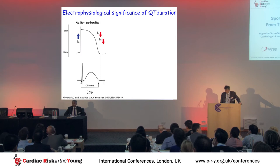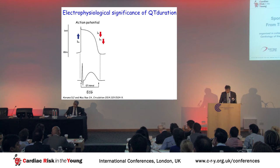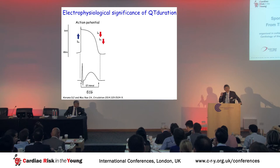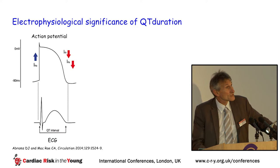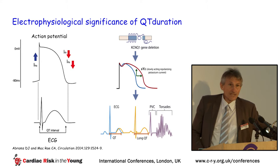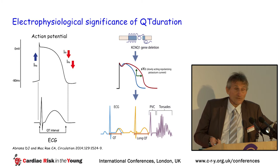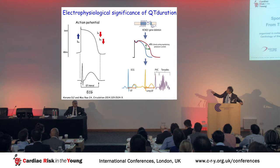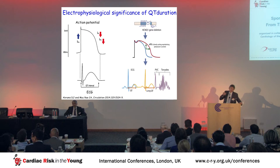What is the electrophysiological significance of QT duration? The normal action potential with ion movements is represented on the ECG. The QT duration represents the beginning of depolarization of the first ventricular cell until the end of repolarization of the last ventricular cell. A mutation on a potassium ionic channel can cause an increase in action potential duration, increasing QT duration and creating a risk of arrhythmias when QT is too long or too short.